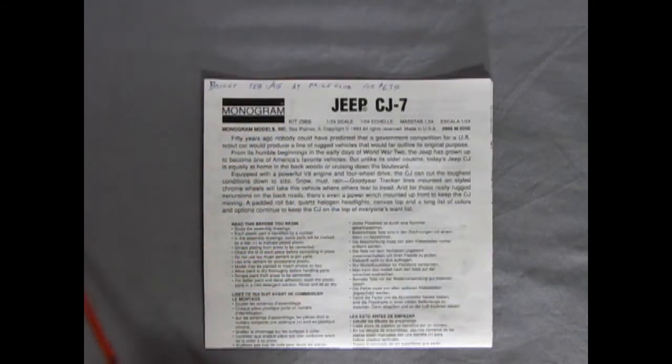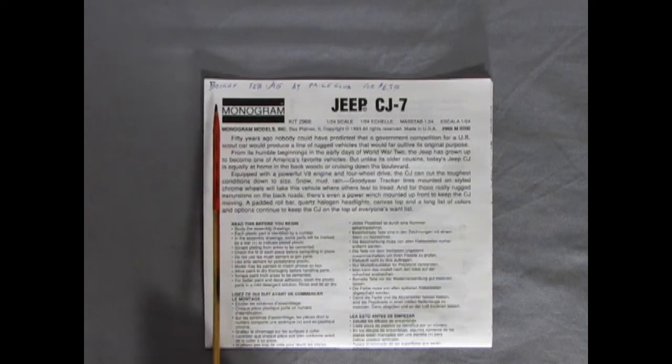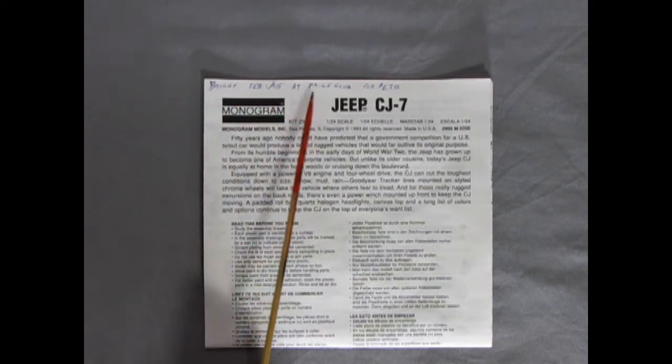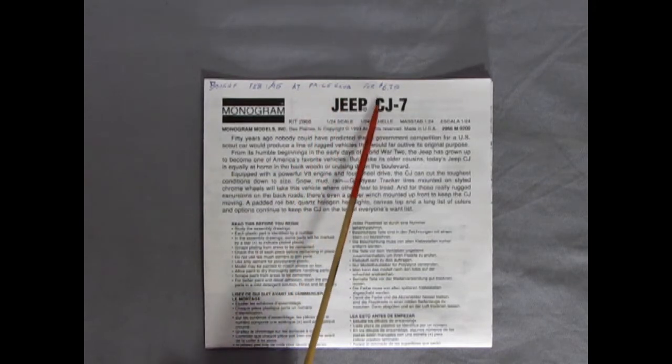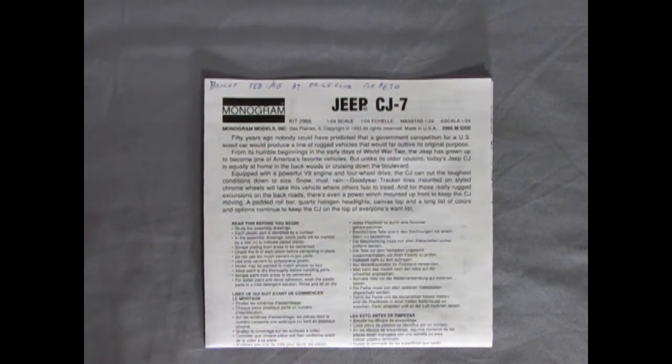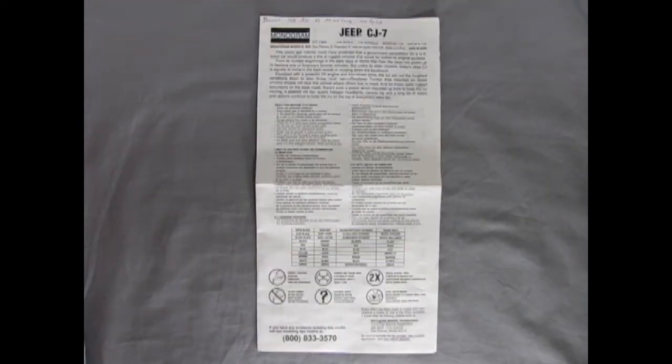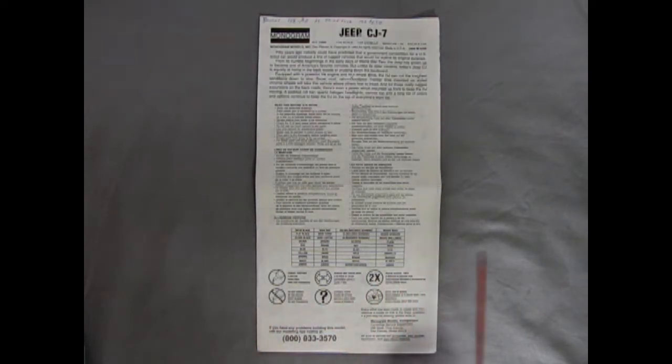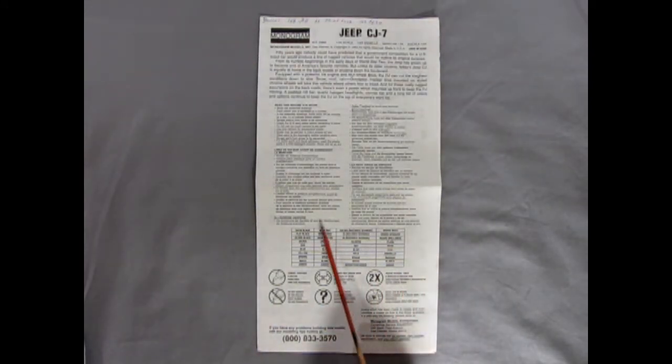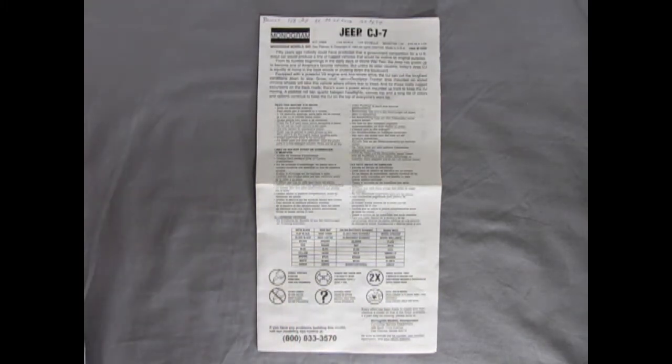Here we have our instruction sheet from the Monogram Jeep CJ7 and I bought this a very long time ago February 1st 1995 at a place called Price Club for $6.95 and if you were to get this model kit today it would at least be $38 Canadian. The instruction sheet unfolds just like a map and on the front here we have a nice little paint chart as well as the symbols we need to understand in order to build this model kit.